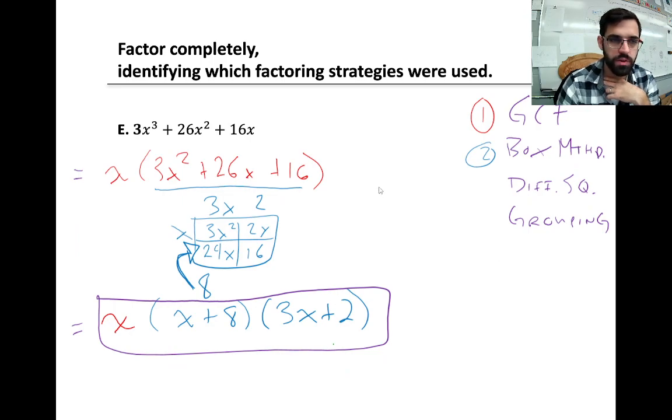Okay, so this one, first thing we'll do, greatest common factor of x. Second thing, we have a 3 term. We're going to use box method to factor this thing. Then here's our final answer, or our final factor expression.